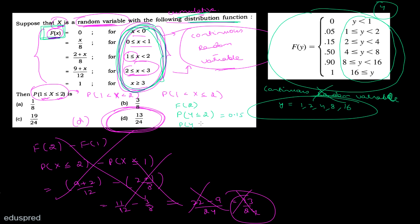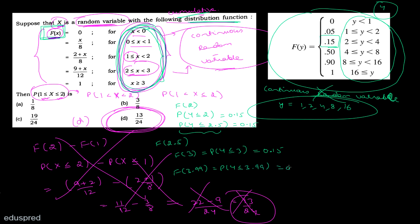देखो, अगर मैं पूछूँ: F(2) की value क्या है? यानी probability that y ≤ 2 — वो हो जाएगा 0.15। अब अगर मैं पूछूँ probability that y ≤ 2.5 — तो 2 और 4 के बीच CDF constant है, इसलिए यह भी 0.15 रहेगा। इसका मतलब y ने 2 और 2.5 के बीच कोई value ही नहीं ली। Similarly, F(3) भी 0.15 है और F(3.99) भी 0.15 है — तो y ने उस पूरे interval में कोई value assume नहीं की।